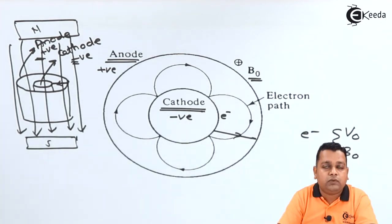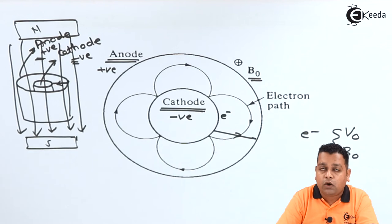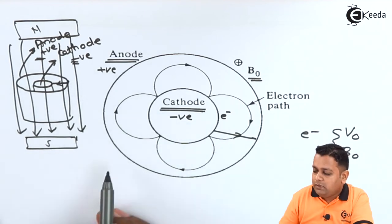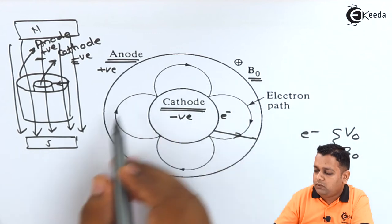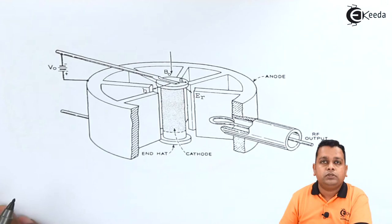In the very first lecture, we covered topics like electron motion in the presence of only electric field and electron motion in the presence of electromagnetic field. We represented equations of electron motion that we shall be using here. We shall now take another diagram that will practically show how exactly the structure of the cylindrical magnetron oscillator is.